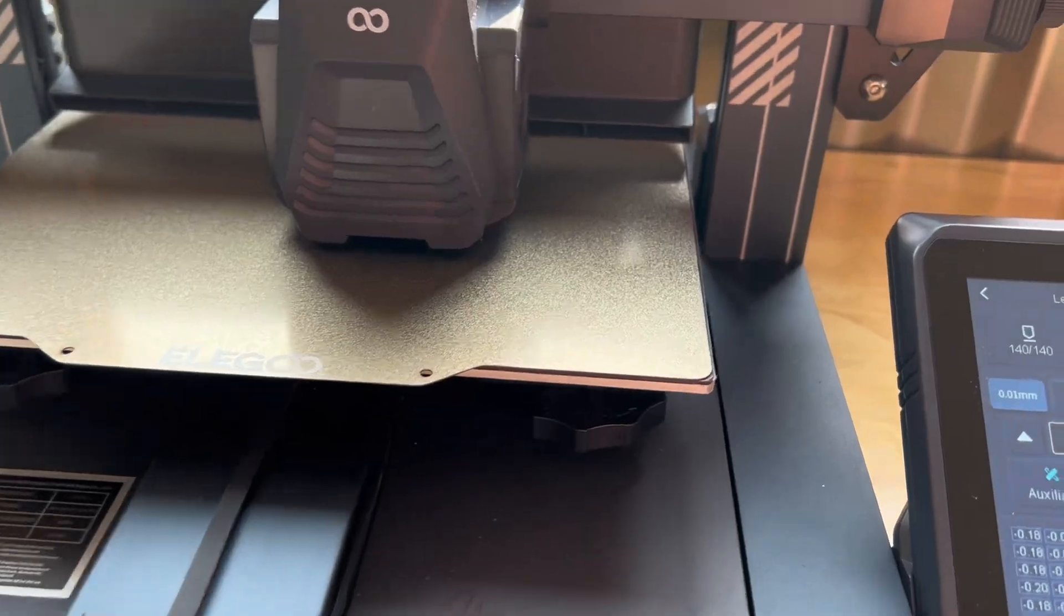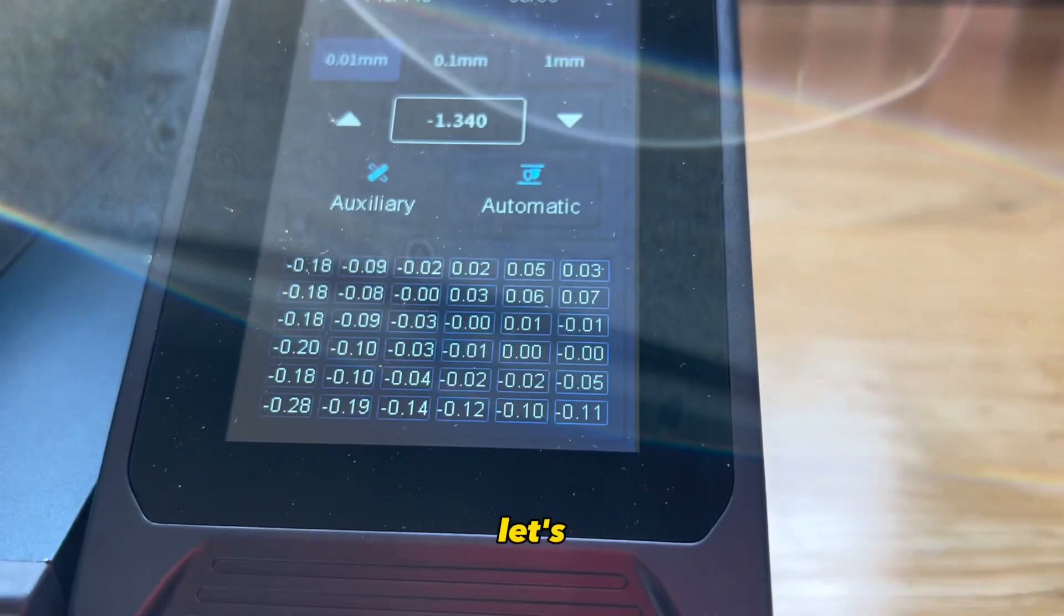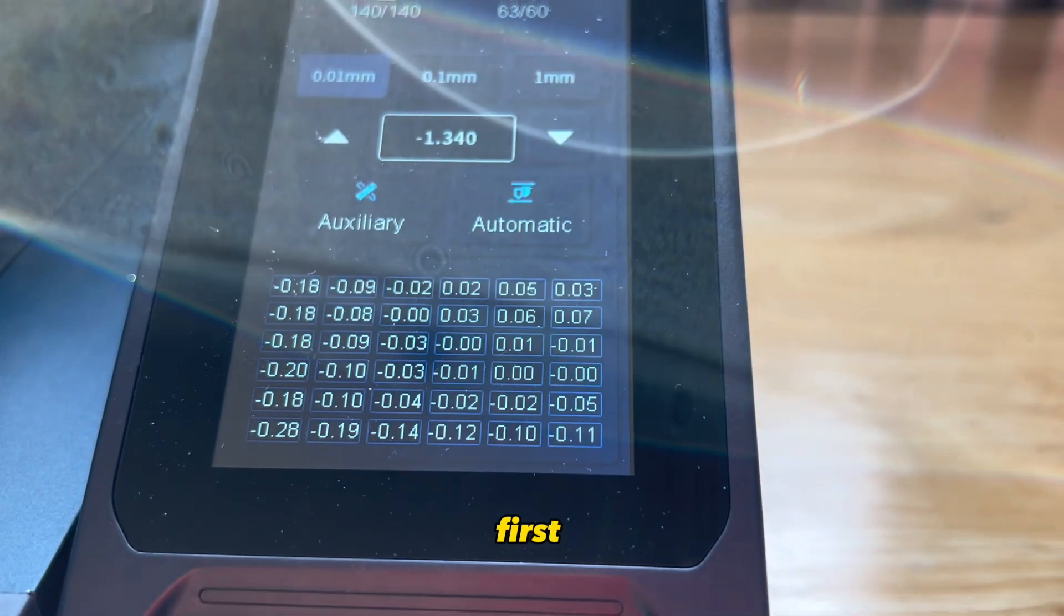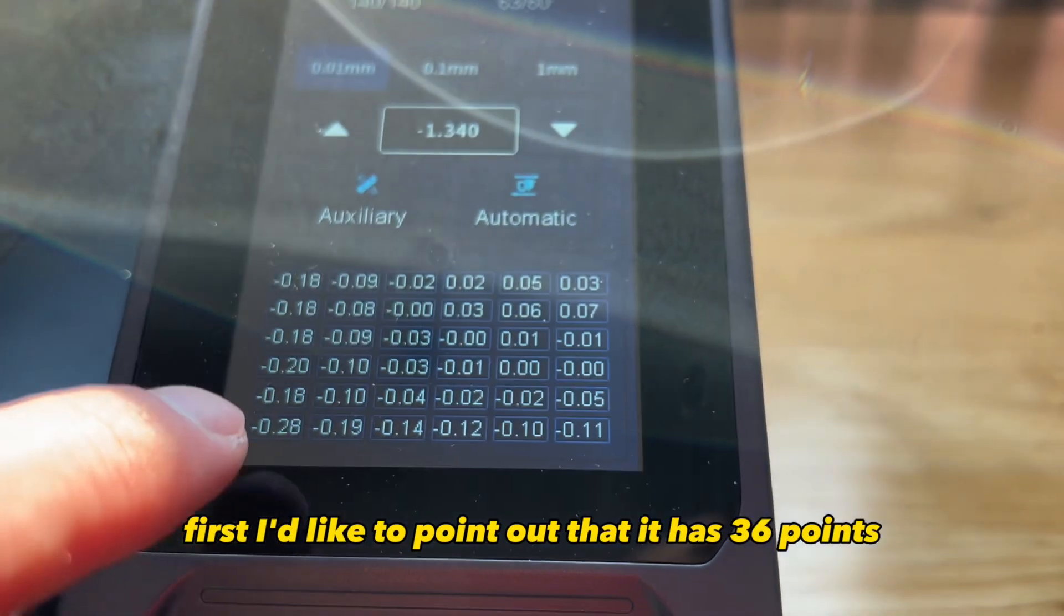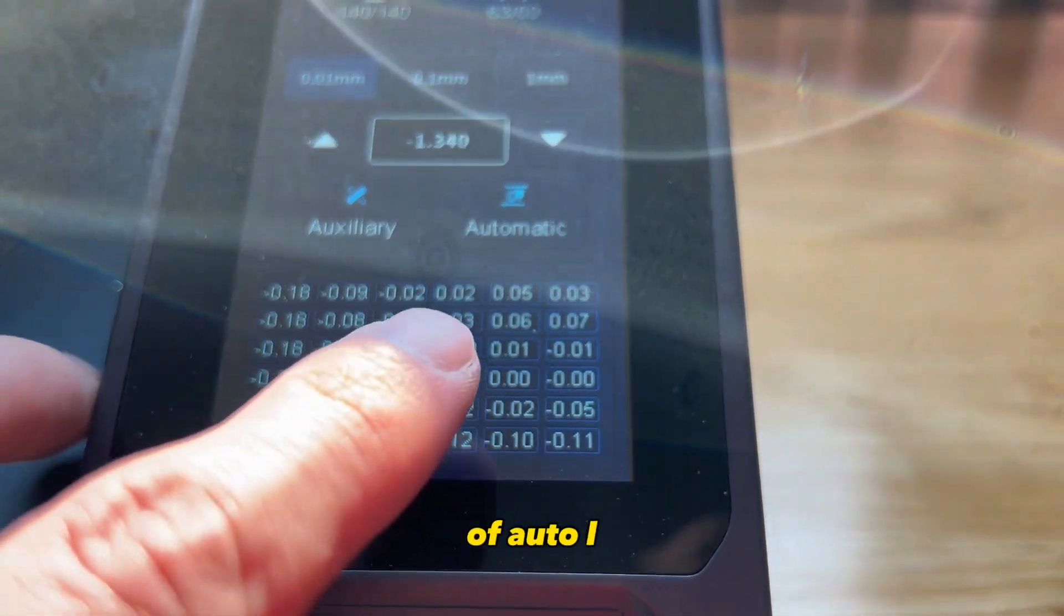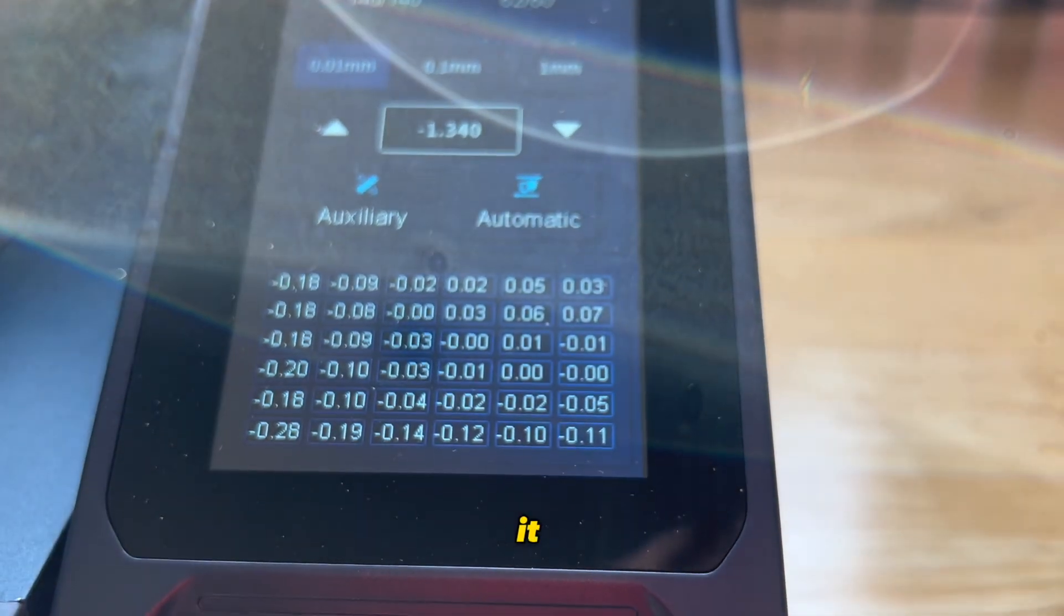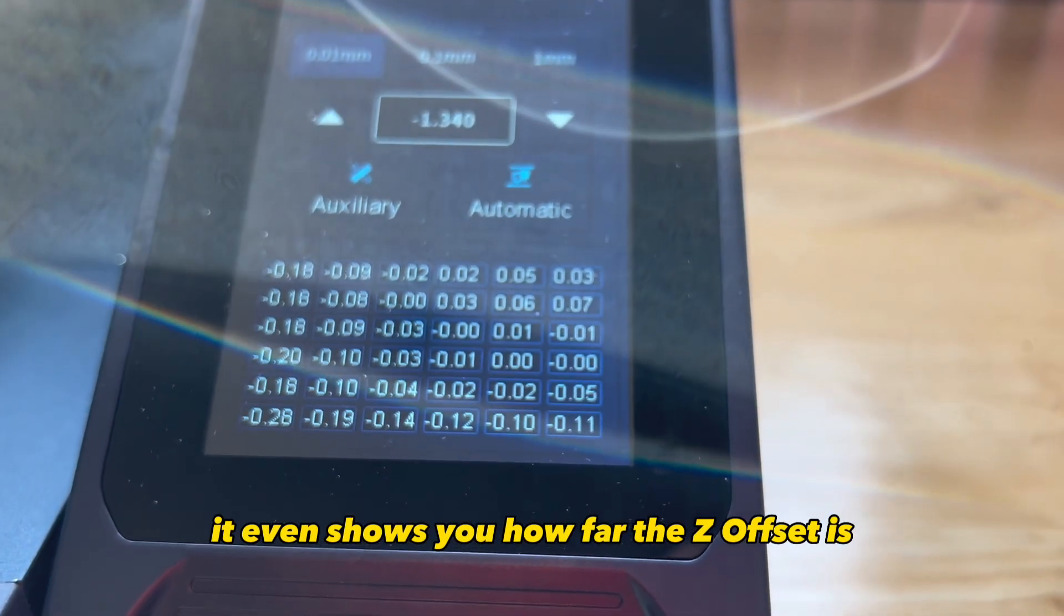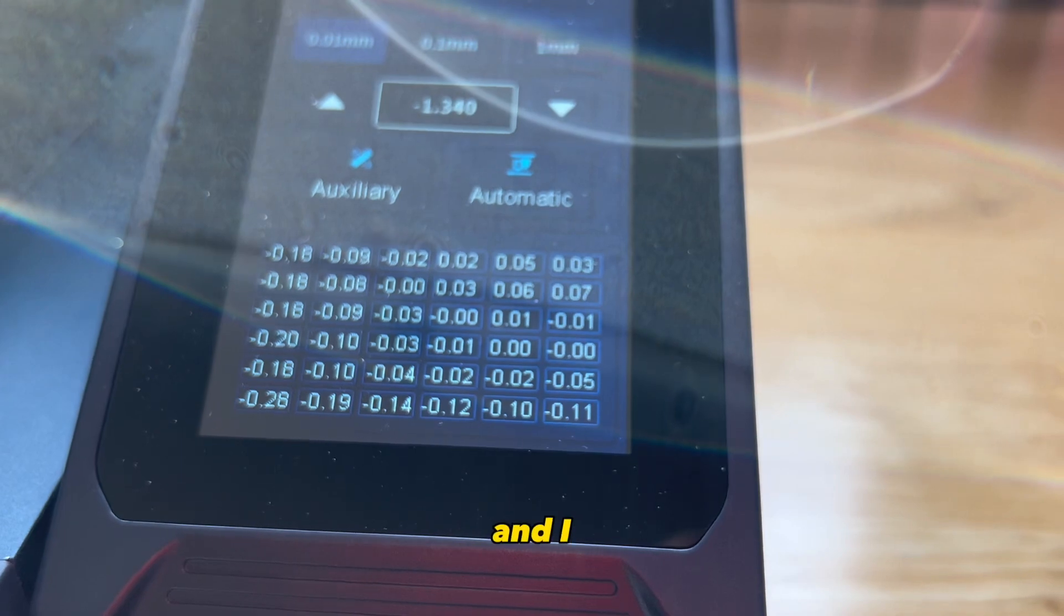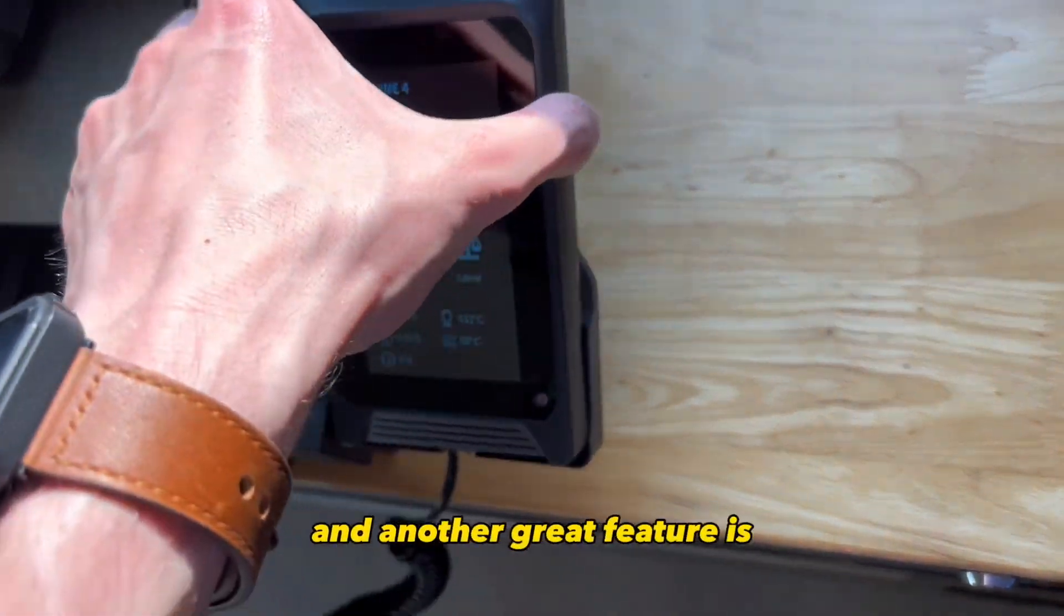I've had the Neptune 4 for a little over a week, let's get into it. First, I'd like to point out that it has 36 points of auto level, and if you look at the screen here it even shows you how far the Z offset is. I actually did pretty good in the middle.